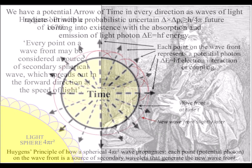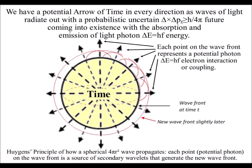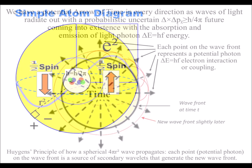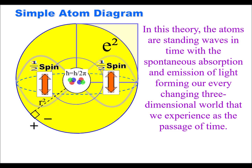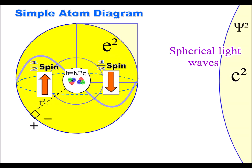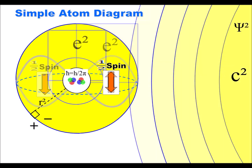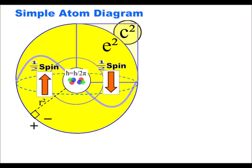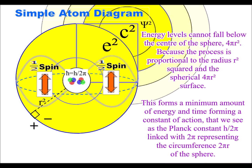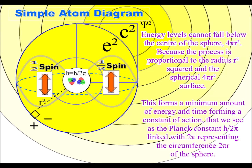Each point on the wavefront represents a potential photon-electron interaction or coupling. We also have an electron sphere surrounding the atomic nucleus of each atom of the periodic table. When there is an absorption and emission of light, there is an exchange of energy in the form of a photon-electron coupling or dipole moment.